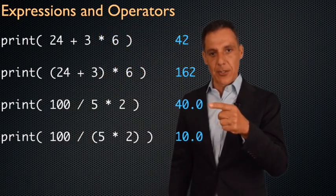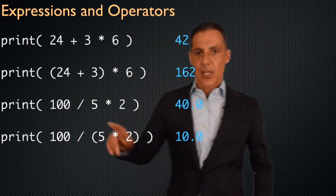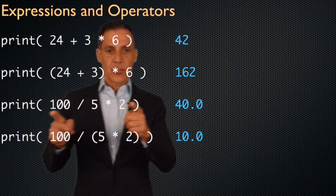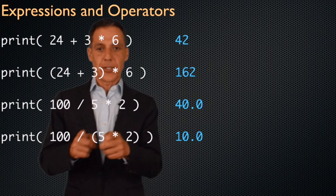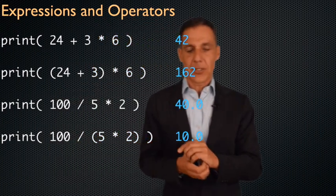Notice something interesting here. There's actually a decimal place here. These are all integers. So why do I have a floating point number here? Same thing here, 100 divided by 10 is equal to 10.